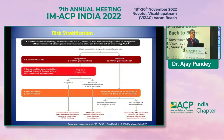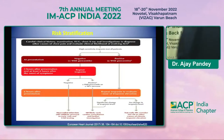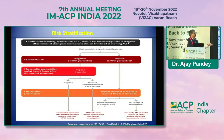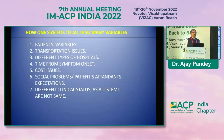Many times a junior resident sees a patient with chest pain, does a troponin immediately, finds it negative, and refers the patient as non-cardiac. But these patients need to be observed in chest pain clinics or holding centers. Troponin levels should be repeated after three hours, and if positive, ECG changes and other risk stratification parameters must be evaluated.